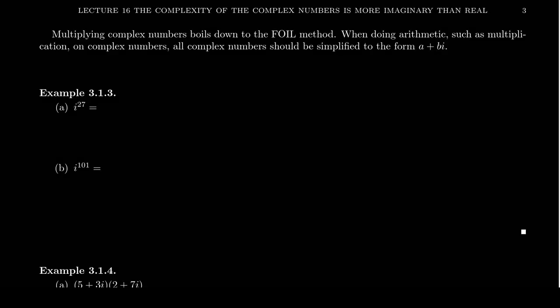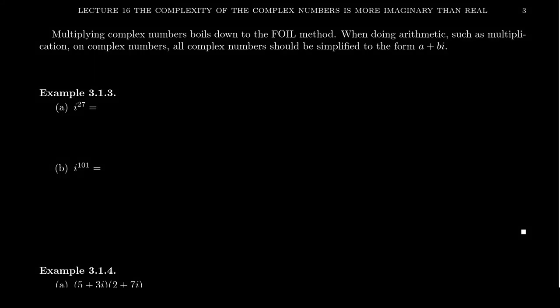We've learned how to add and subtract complex numbers — how does one multiply complex numbers? It turns out that since complex numbers are two-dimensional numbers, a real part plus an imaginary part, multiplying them is going to feel a lot like the FOIL method, because you have a binomial times a binomial essentially.